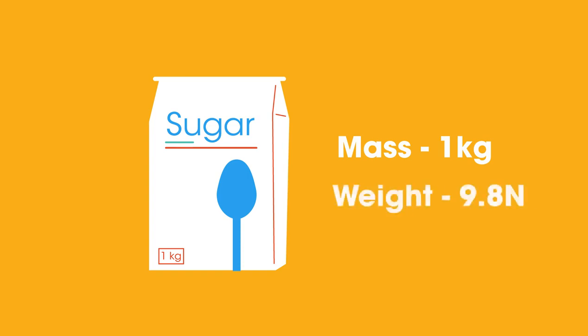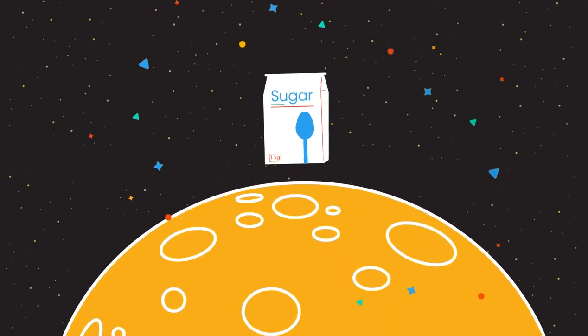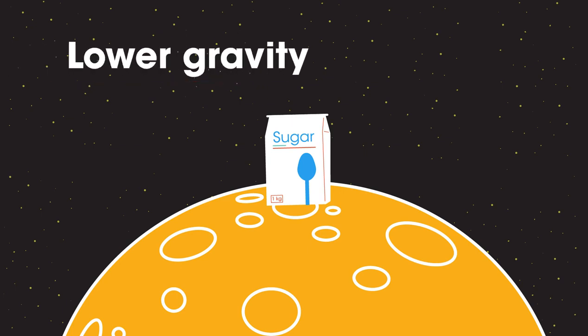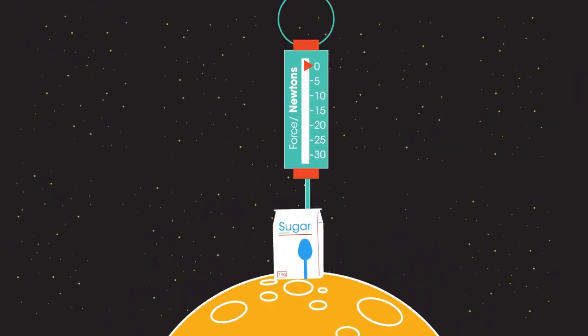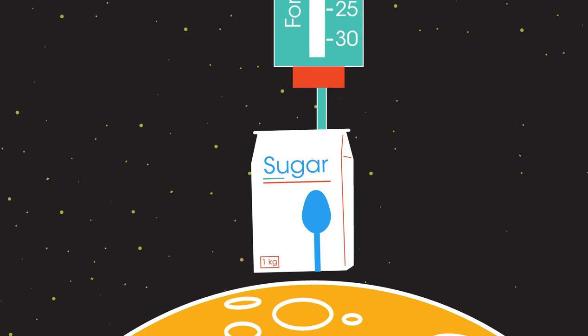Now let's take this bag of sugar to the moon. The moon is much less massive than the Earth and so has a lower gravity. On the moon, g is only 1.6 meters per second per second. See how the weight has dropped compared to when it was on Earth, but notice we still have the same amount of sugar. There is still one kilogram of stuff. The weight has changed but not the mass.